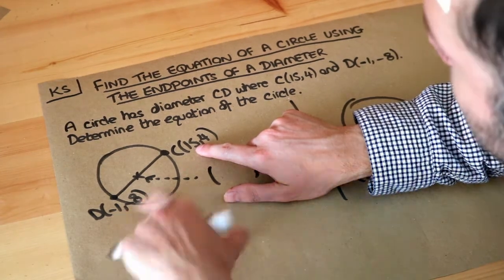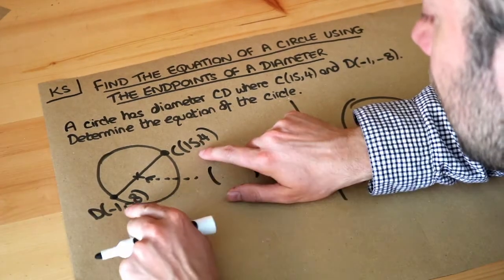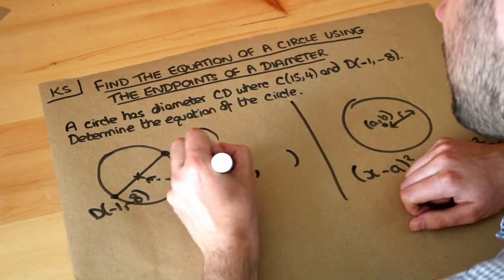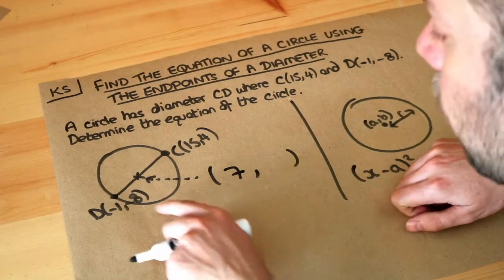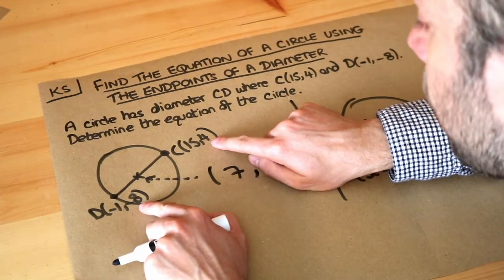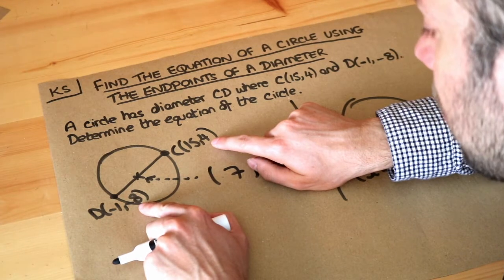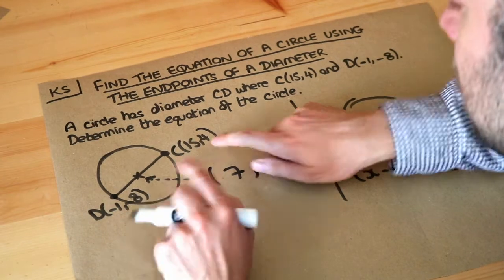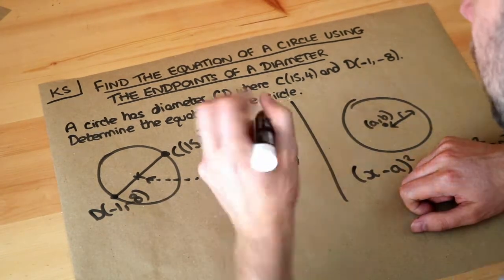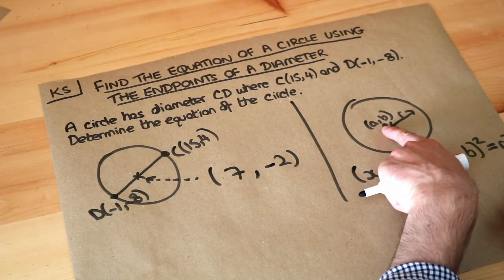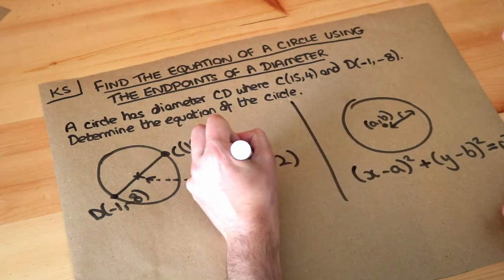...well we add them together and divide by 2. That's how you find the mean of two numbers. So -1 + 15 is 14, divided by 2 is 7. And we do the same for the y values. We want to find the average of the y values, -8 and 4. Well we add them together, divide by 2. -8 + 4 is -4, divided by 2 is -2. If you can do that in your head, then please do so. So that's your center, we've got the (a,b).